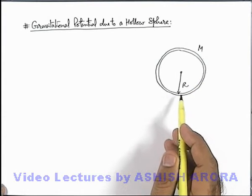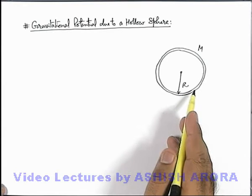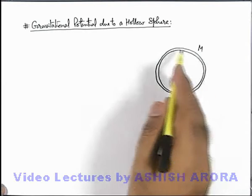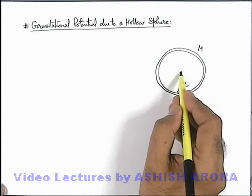For this we already discussed at the time of gravitational field strength that for outer region up to surface, the whole mass of this spherical shell can be assumed to be concentrated at its center C.